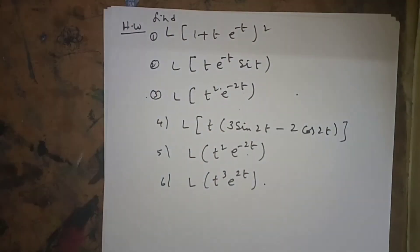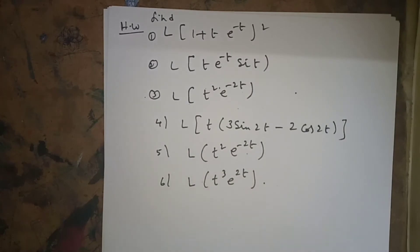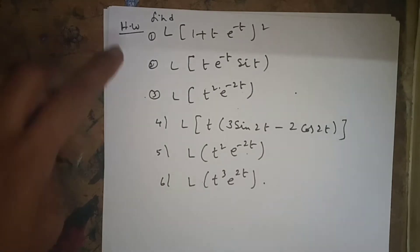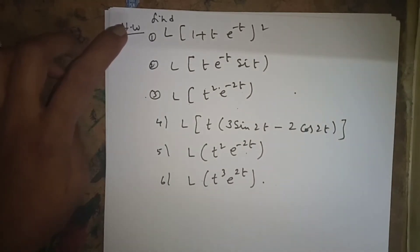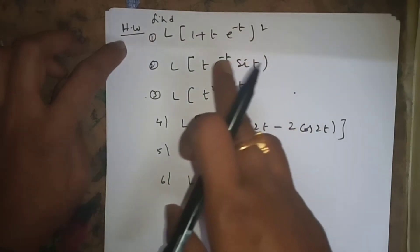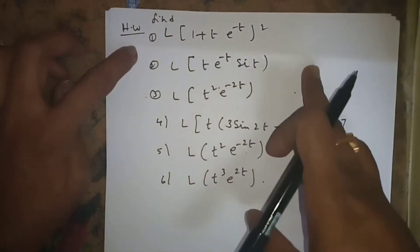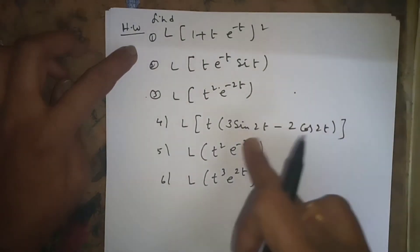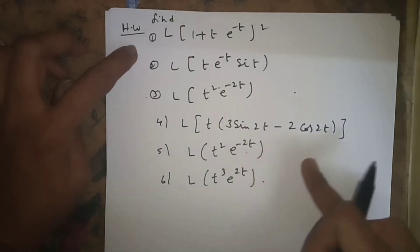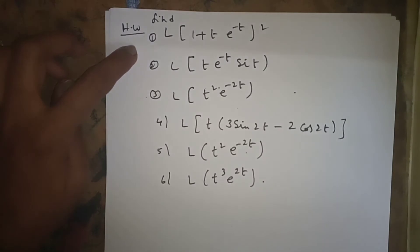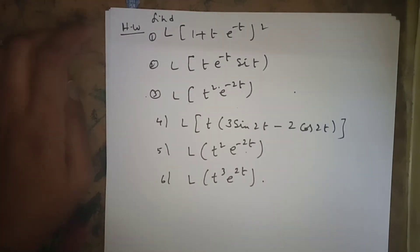As homework, find L{(1 + t · e^(-t))²}. Expand the whole square, split L, and apply the same method. For terms like t^n · e^(-t) · sin(t), apply the multiplication by t^n formula. Do practice.